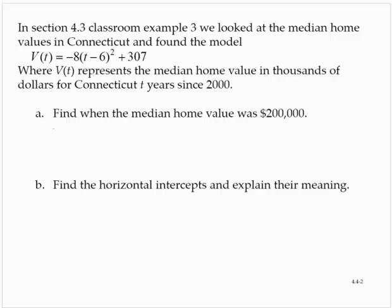In a previous example, we found the median home values in Connecticut could be modeled by V(t) = -8(t-6)² + 307, where V(t) represented the median home value in thousands of dollars in Connecticut t years after 2000.